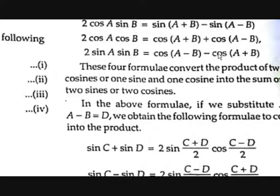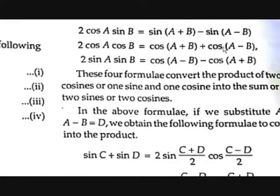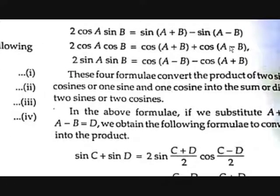Now you may ask: we got the formula for cos A times sin B and similar products, but how can we get the formula for cos A + cos B, cos A − cos B, sin A + sin B, sin A − sin B? If we replace A+B with C and A−B with D, then from the formula 2 cos A cos B = cos(A+B) + cos(A−B), we get cos C + cos D on the right side.